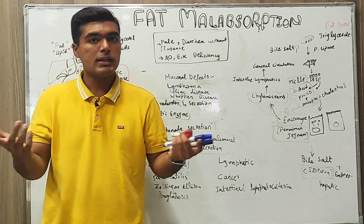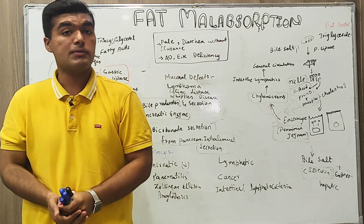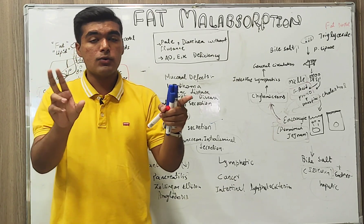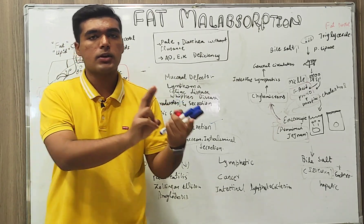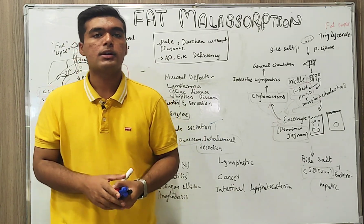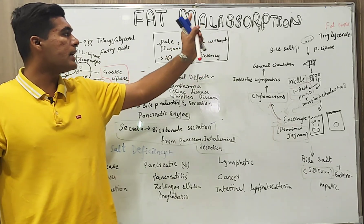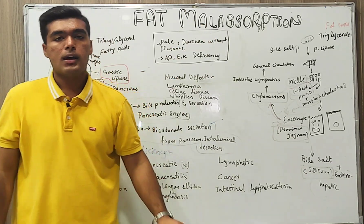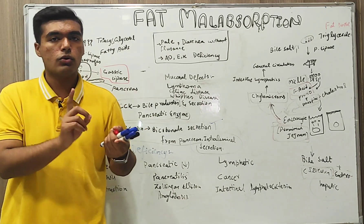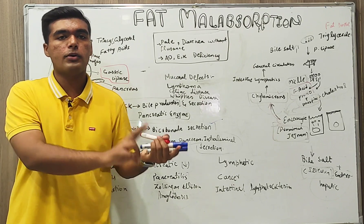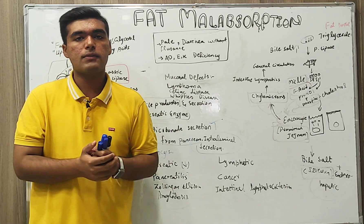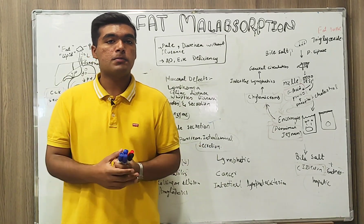Regarding clinical manifestations, a person with fat malabsorption will be pale due to ADEK deficiency. Vitamins A, D, E and K require fat for their absorption, while vitamins C and B are water-soluble and do not. Due to vitamin A deficiency, night blindness occurs. Vitamin D deficiency causes osteomalacia, rickets, and bone disorders. Vitamin E deficiency leads to neuromuscular disorders. Vitamin K deficiency increases the tendency of bleeding.